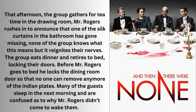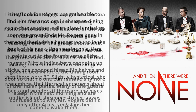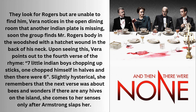The group eats dinner and retires to bed, locking their doors. Before Mr. Rogers goes to bed he locks the dining room door so that no one can remove any more of the Indian plates. Many of the guests sleep in the next morning and are confused as to why Rogers didn't come to wake them. They look for Rogers but are unable to find him. Vera notices in the open dining room that another Indian plate is missing. Soon the group finds Mr. Rogers' body in the woodshed with a hatchet wound in the back of his neck. Vera points out the fourth verse: 'Seven little Indian boys chopping up sticks, one chopped himself in halves and then there were six.'